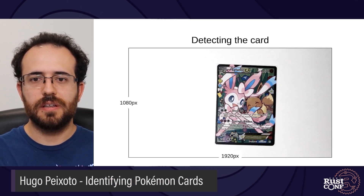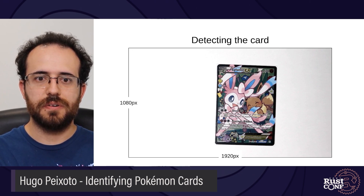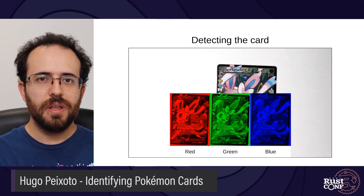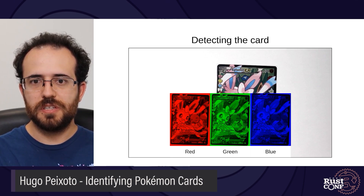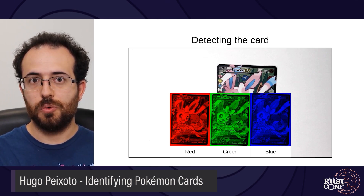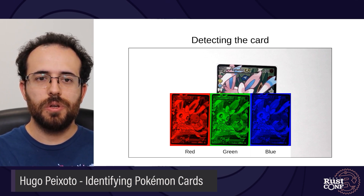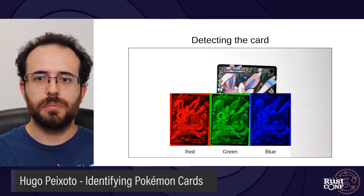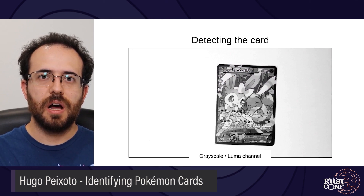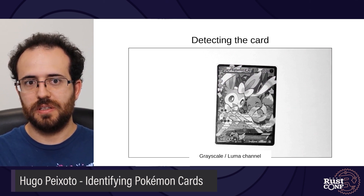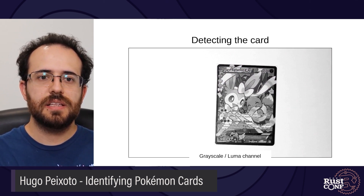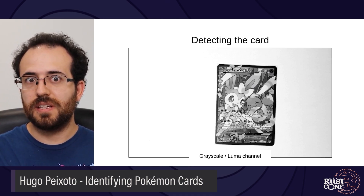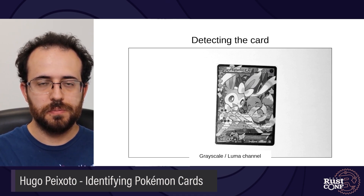Let's focus on detecting and extracting the card image from the frame. We're working with 1080p color images. You might think of a color image as having three channels: red, green, and blue. Most computer vision algorithms only really care about the brightness of the pixels, or how light or dark each pixel is. This is equivalent to working with grayscale images, and that's what we're going to do.